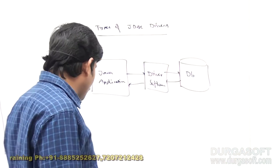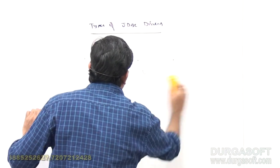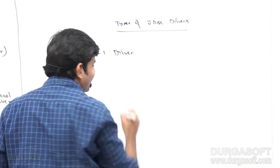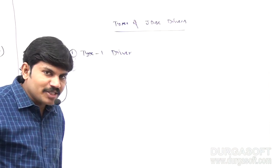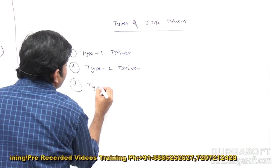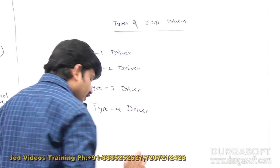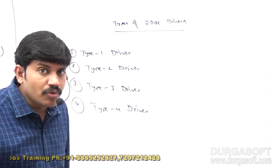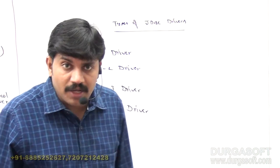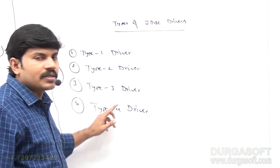The four types are: Type 1 driver, Type 2 driver, Type 3 driver, and Type 4 driver. So total JDBC drivers are divided into four types. In an interview, if someone asks how many JDBC drivers are available, your immediate answer should be: four — Type 1, Type 2, Type 3, and Type 4.